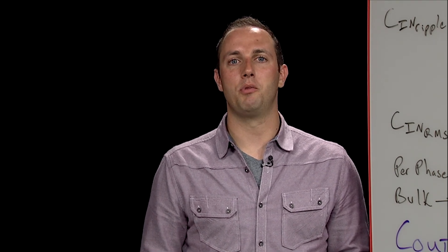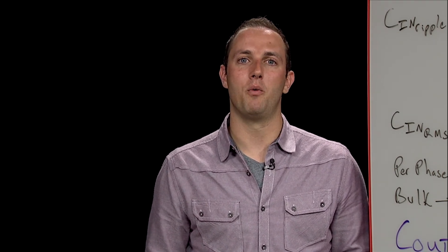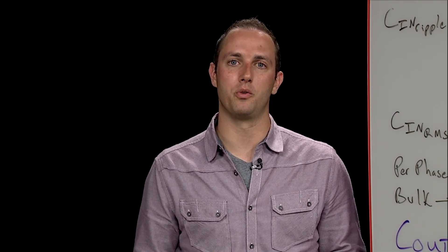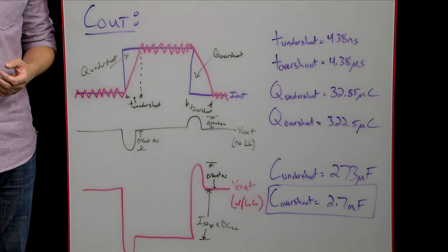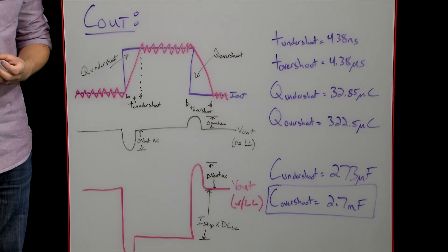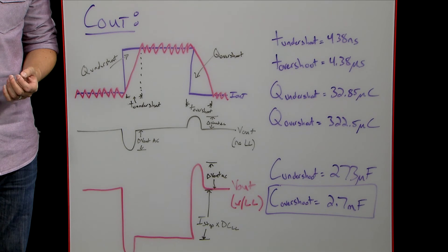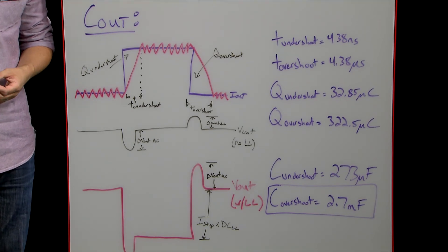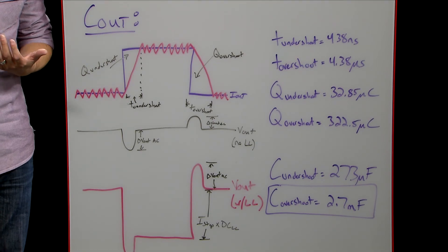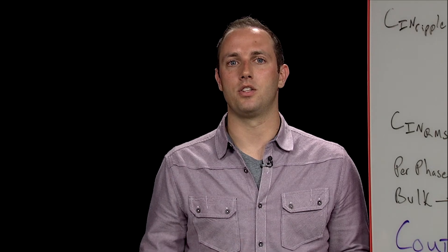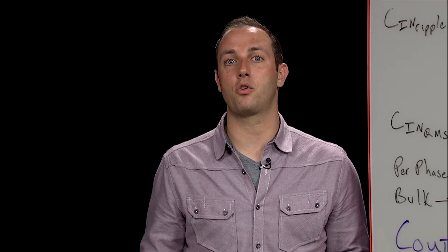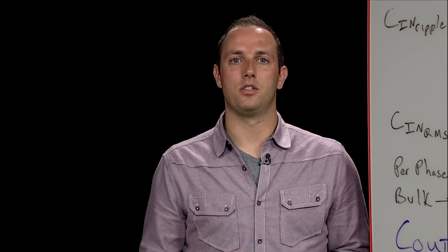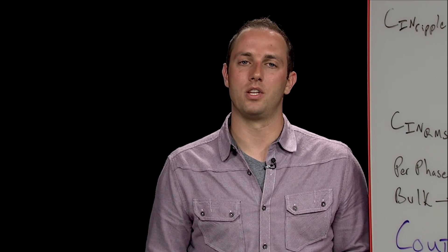During a load step, charge is pulled from the output caps by the load while at the same time charge is being replaced by the energy stored in the inductor as it slews to the new current value. This trickle of charge from the inductor helps reduce the undershoot on Vout. When the load current releases, though, to a lower value, the capacitor charge is no longer being depleted, and now the excess charge on the inductor overfills the cap, causing Vout to overshoot. Since the inductor energy is proportional to the current squared, there's so much extra energy stored in these chokes at the time of release than a step, and so the overshoot is usually much greater than the undershoot.